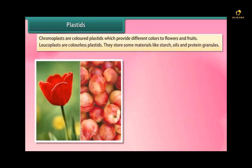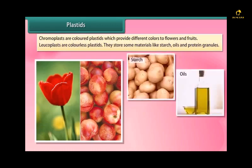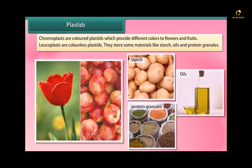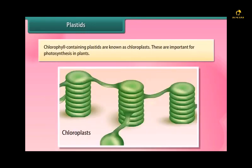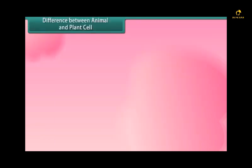Leucoplasts are colorless plastids. They store some materials like starch, oils and protein granules. Chlorophyll containing plastids are known as chloroplasts. These are important for photosynthesis in plants. This covers the difference between animal and plant cell.